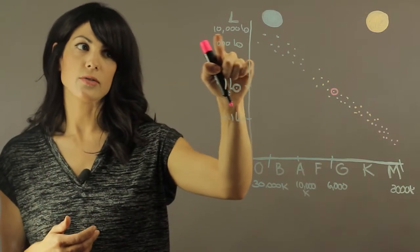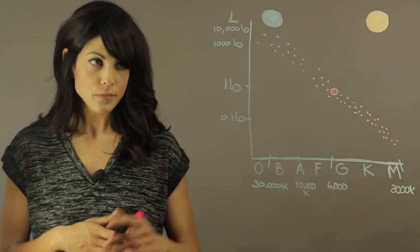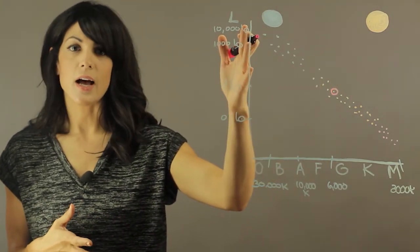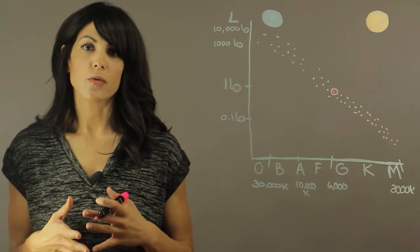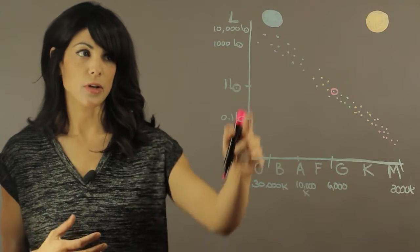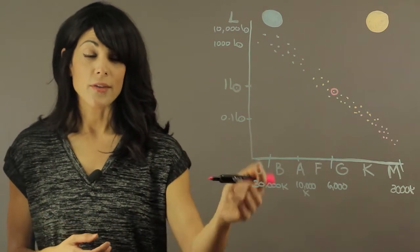So over here you have stars that are 10,000 times more luminous than the sun, and so forth. So the stars that are on this side spend a lot of their fuel a lot faster, because they're bigger, they need a lot more energy to power themselves, they're a lot brighter, they're a lot bigger, they're a lot hotter.